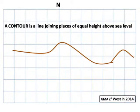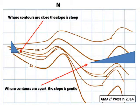A contour is a line that joins places of equal height above sea level. We use contours to show the shape of the land. Where contours are close together the slope is steep; where the contours are far apart the slope is gentle, and this slope varies.